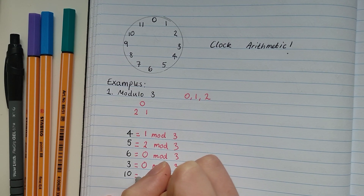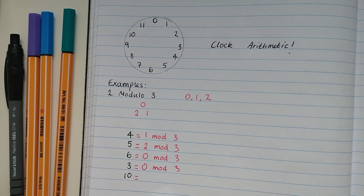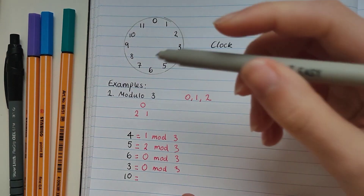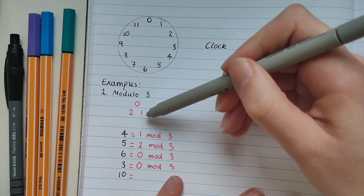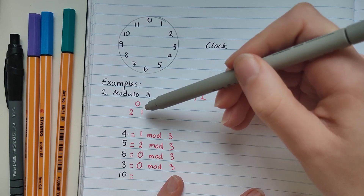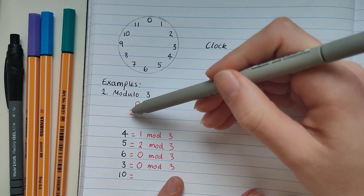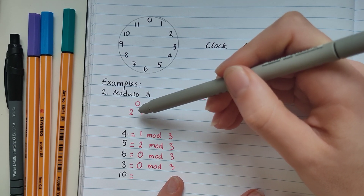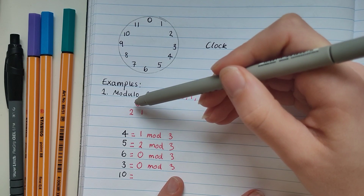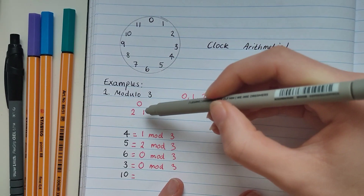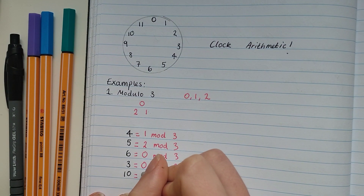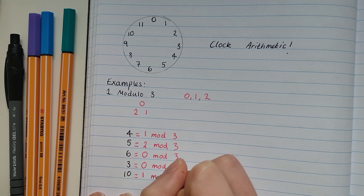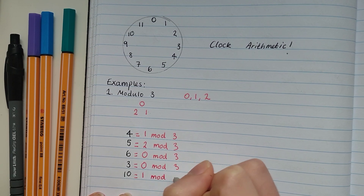Last one — let's try 10 modulo 3. Let's count to 10 on our clock: 0, 1, 2, 3, 4, 5, 6, 7, 8, 9, 10 — we got back to 1. So 10 is equal to 1 modulo 3.